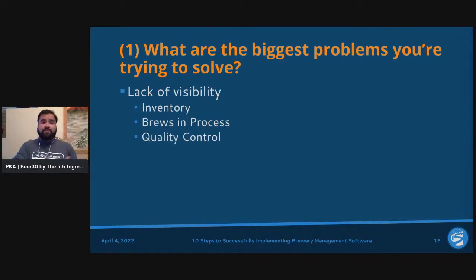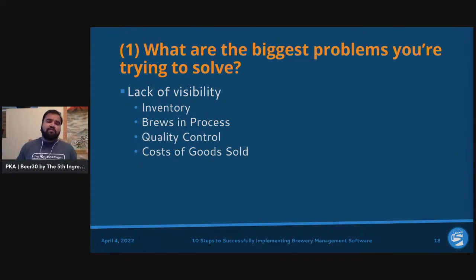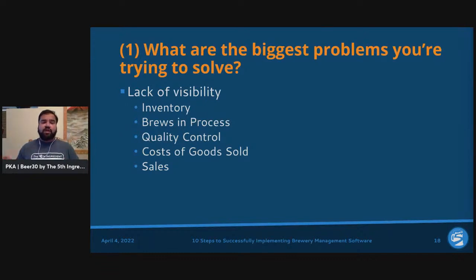Quality control — understanding what's happening with consistent product — is critical. Understanding cost of goods sold is important for every brewery owner, head brewer, and business operator: how much is it actually costing to make one pint of beer? From there, understanding sales volume, inventory, and pricing and how those pieces tie together.